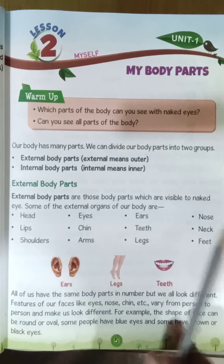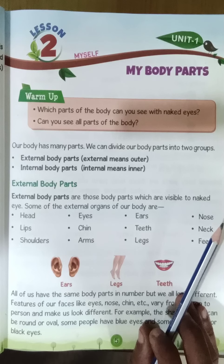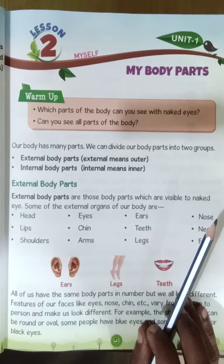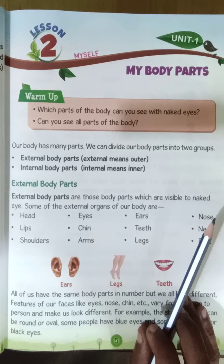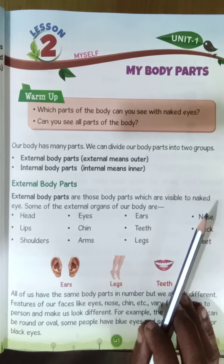Head, eyes, ears, nose, shoulders, arms — we can see these with our naked eyes. But can you see all our body parts? No, we can't see all our body parts because some body parts are present in our inner body, inside our body. That's why.